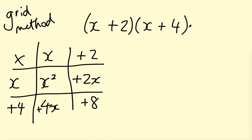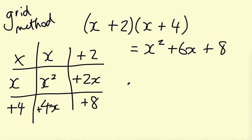Now we write our answer: X squared, then we've got plus 4X and plus 2X which combine to give plus 6X, and then plus 8. So expanding those double brackets using the grid method gives X squared plus 6X plus 8.